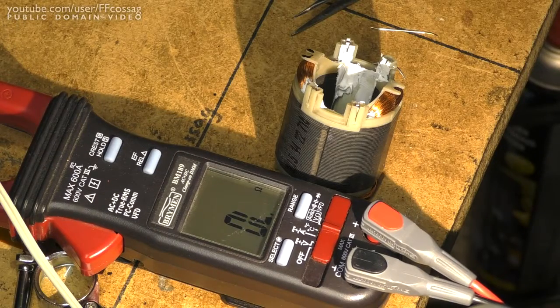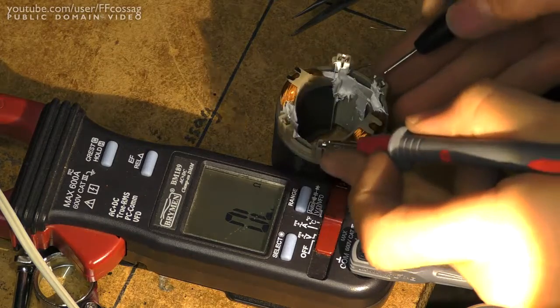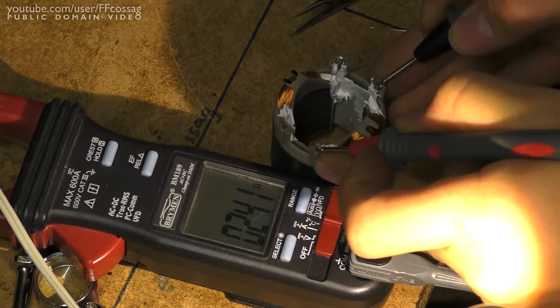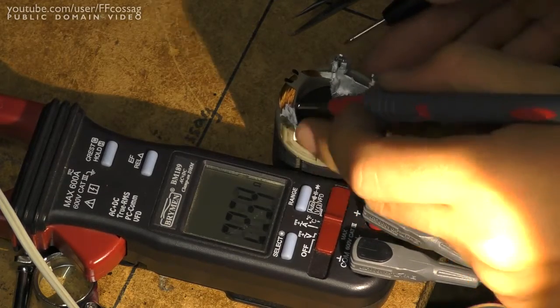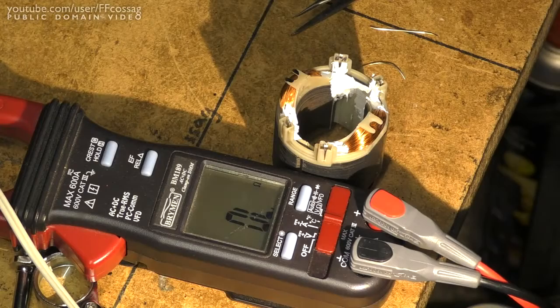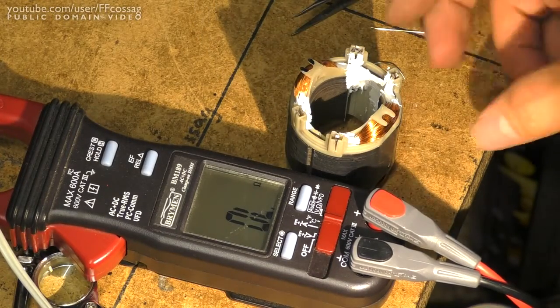Alright, so I've now just siliconed it up to stabilize it and lo and behold, now we've got continuity - 24 ohms on both coils. So I'm just going to let this dry and it's hopefully going to be good to go.